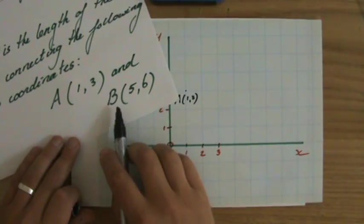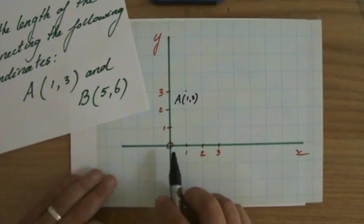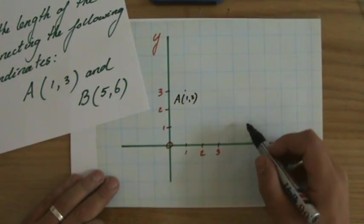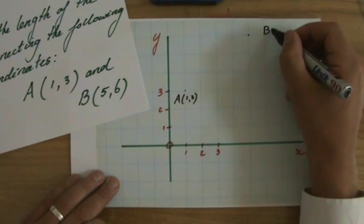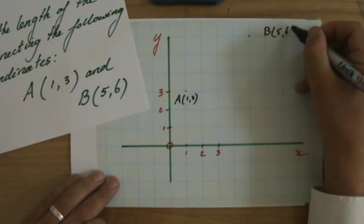And we have point B, 5, 6. So 5 horizontally, 1, 2, 3, 4, 5, 6. That's point B. Let me write that, 5, 6.